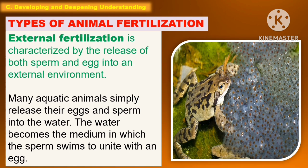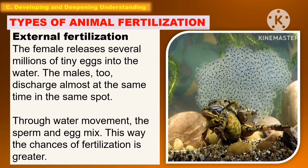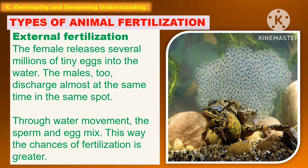External fertilization is characterized by the release of both sperm and egg into an external environment. Many aquatic animals simply release their eggs and sperm into the water. The water becomes the medium in which the sperm swims to unite with an egg. The female releases several millions of tiny eggs into the water, and the males discharge at almost the same time in the same spot. Through water movement, the sperm and egg mix, and the chances of fertilization are greater.